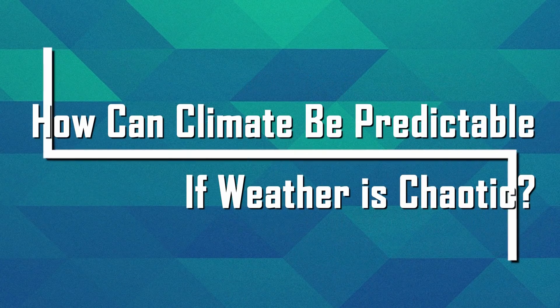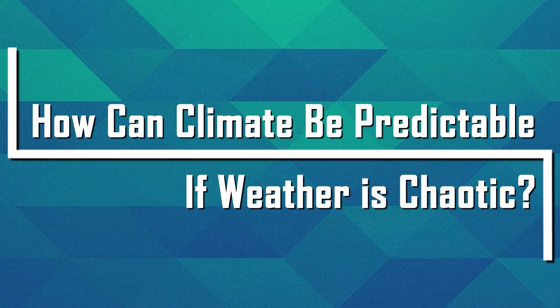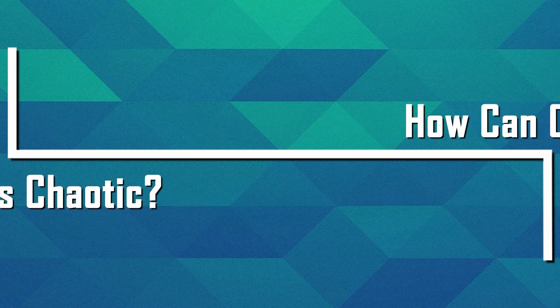The answer they usually get is climate is not weather. Which is correct, but doesn't really explain it. And I think it's actually a good question. How is it possible that one can make reliable long-term predictions when short-term predictions are impossible? That's what we will talk about today.